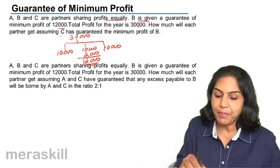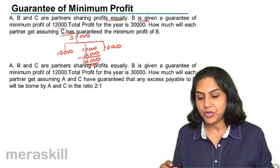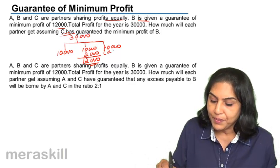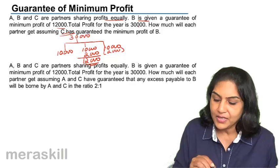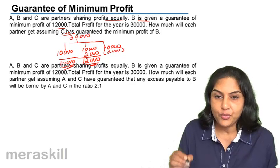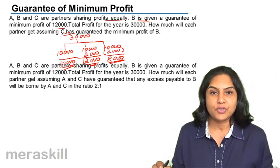So what does this say? How much will each partner get assuming C has guaranteed the minimum profit to B? This entire shortfall of 2,000 will be given by C. So how will the profits be shared? A will get 10,000, B will get 12,000 since he was guaranteed 12,000, and C will get only 8,000.